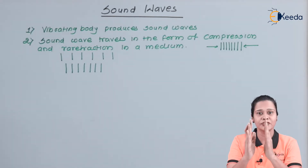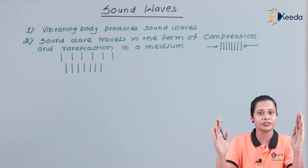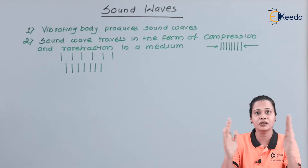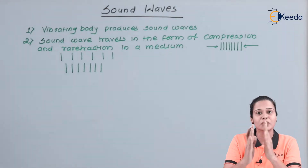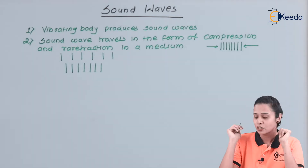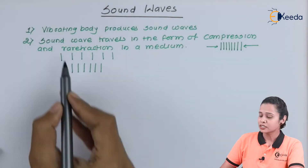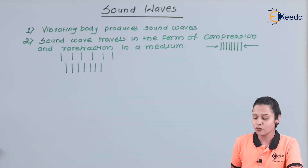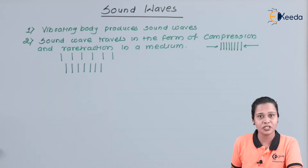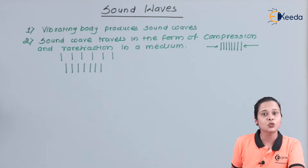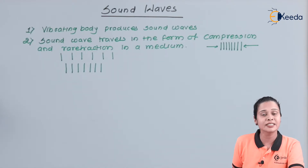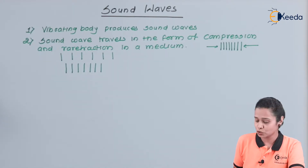So there is alternating compression and rarefaction in the medium — continuous compression, rarefaction, compression, rarefaction — and this is nothing but vibrations. Sound waves travel in the form of compression and rarefaction in the medium. It is a to-and-fro motion, that is why we can say it is a periodic motion.